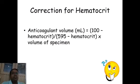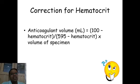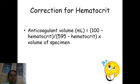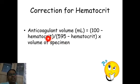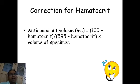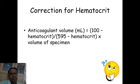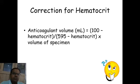To correct the anticoagulant volume for high hematocrit, the formula is: suppose you have decided to collect 2 ml of specimen and the patient's hematocrit is 60. Then: (100 − hematocrit) ÷ (595 − hematocrit) × volume of specimen to be collected. That result gives the anticoagulant volume that should be present in the tube.